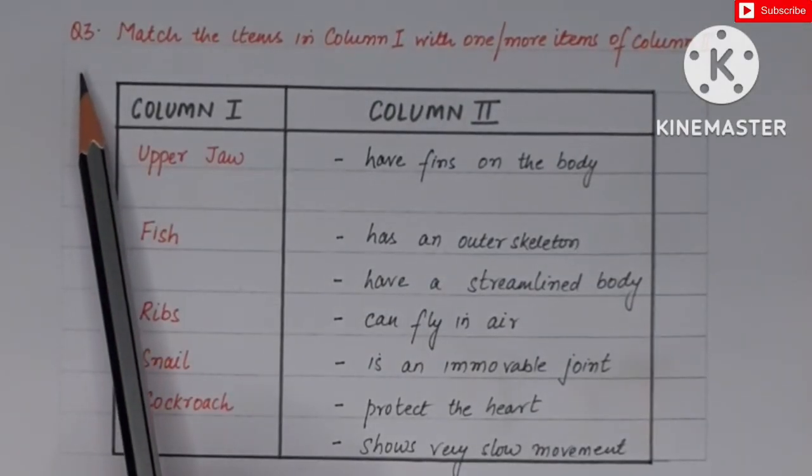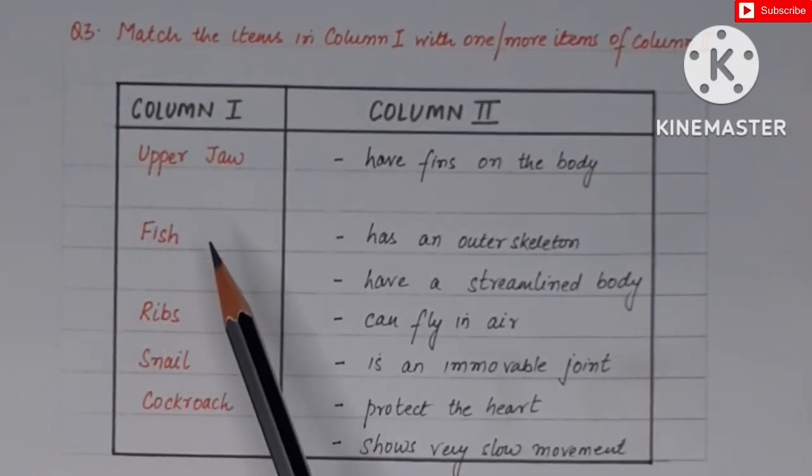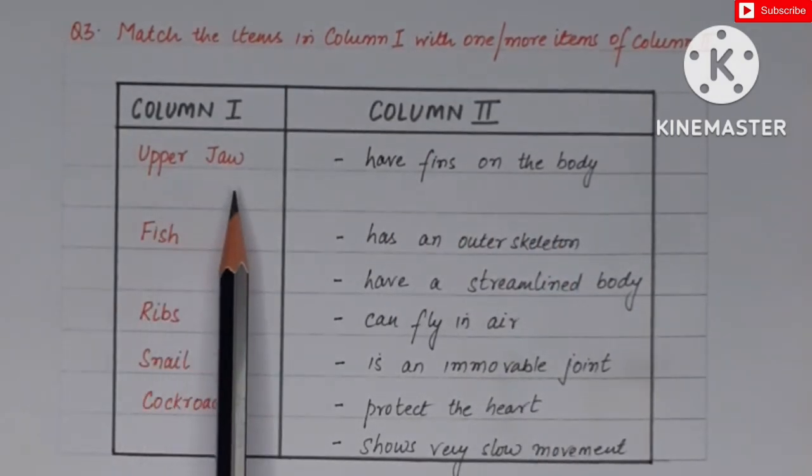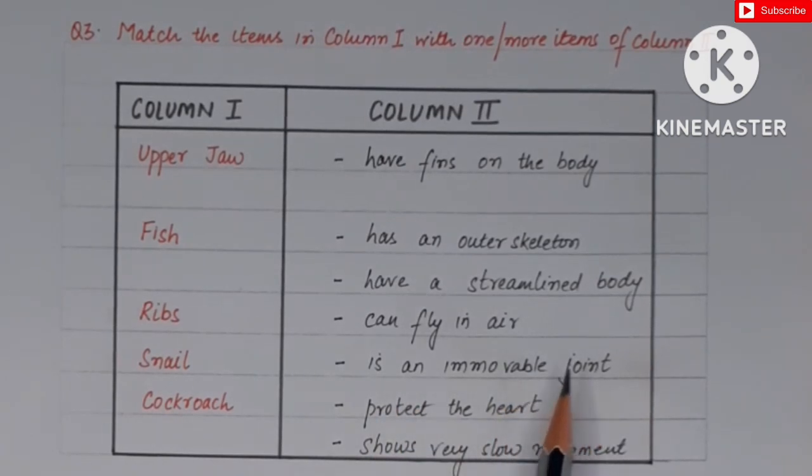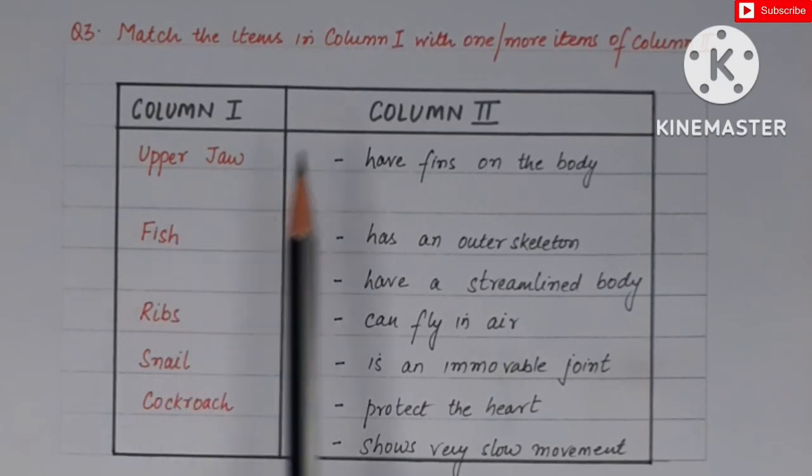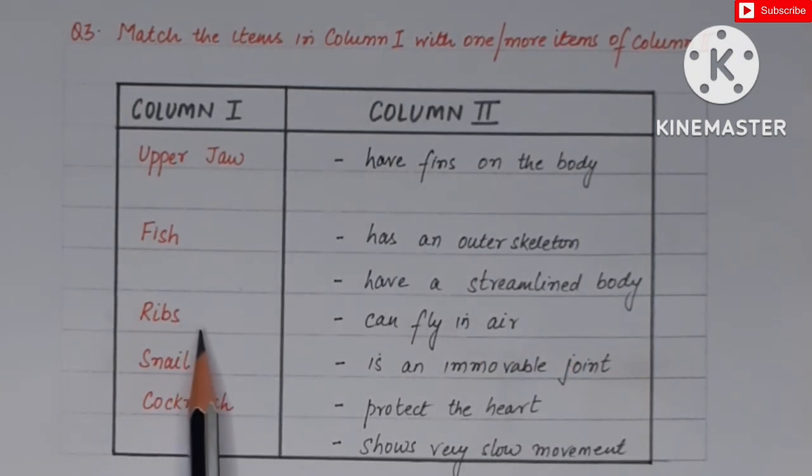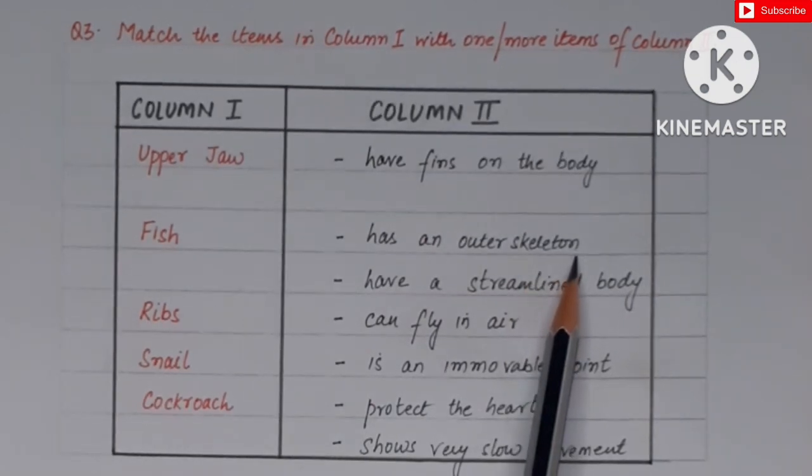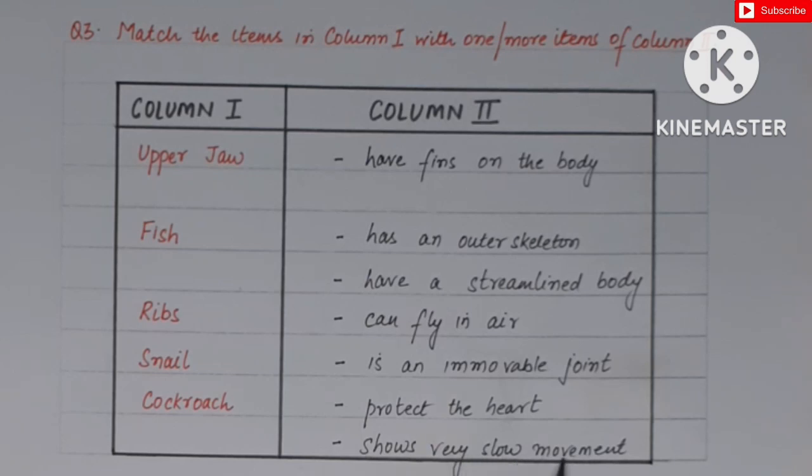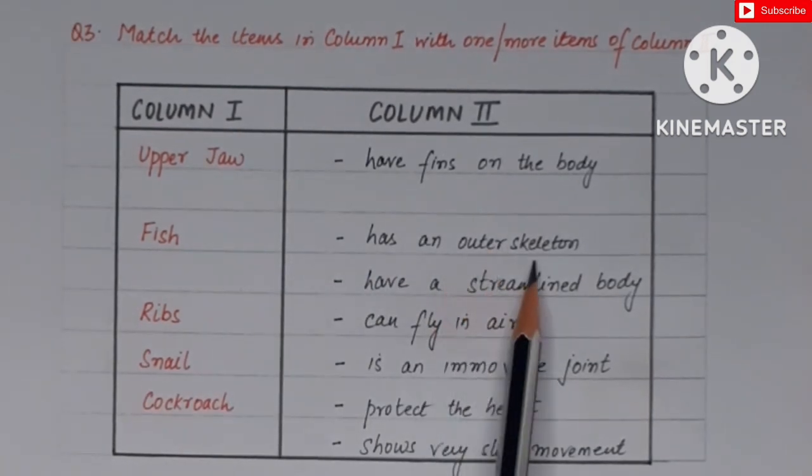Now question number three. In question number three we have to match the items. Some items are given in column 1. We have to match those items with the items in column 2. So the first one is upper jaw. Upper jaw is an immovable joint. The skull and upper jaw, the joint between them is immovable joint. Then fish: fish have fins on the body and they have streamlined body. Streamlined body means that the front or rear part is tapered and middle portion is thick. Then ribs: ribs are curved bones present in the chest area and they form a rib cage-like structure. The rib cage protects the delicate organs that are present in the chest. So one of them is heart, so it protects the heart. Then snail: body of snail also has the outer skeleton which we call shell, and then snail also shows very slow movement.